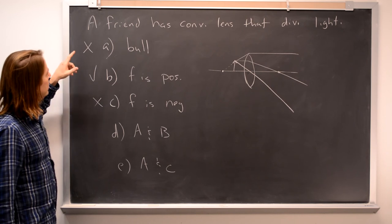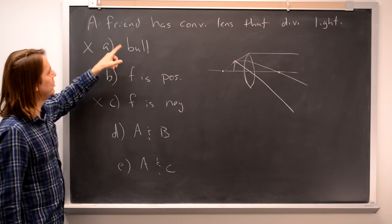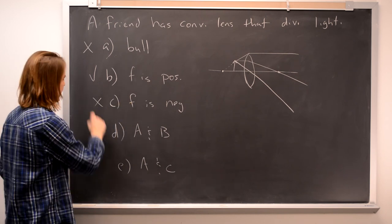And then can A and B be true? No. Can't be true because yes you can make a converging lens diverge light. So that's not true.